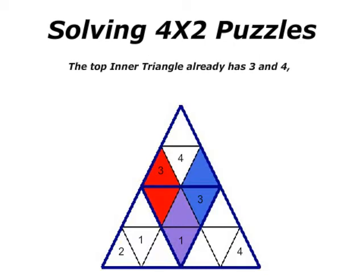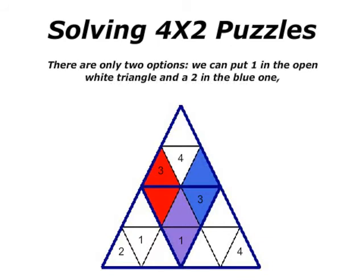The top inner triangle already has 3 and 4, so we need to add 1 and 2. There are only two options. We can put 1 in the open white triangle and a 2 in the blue one, or vice versa.